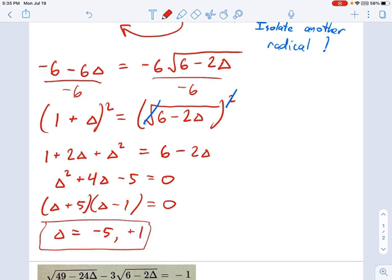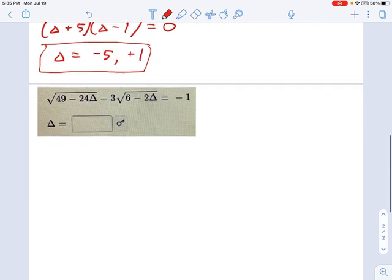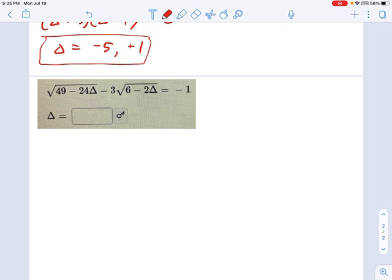Alright, so the reason I have this equation written down again here is because we're not done yet. Okay, we still have more to do. You have to check and see whether these solutions actually work. So let's start with this one. Let's say delta equals negative 5.